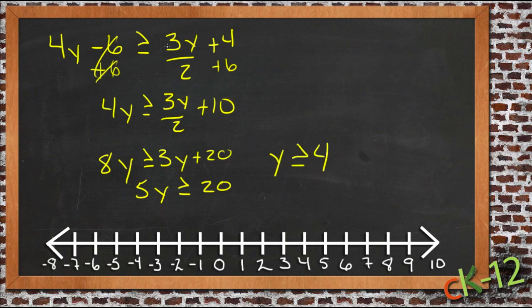So you can see these are exactly the same series of steps I would have gone through if this had been an equation. If this just said equals in here, then this wouldn't have been a new lesson. This would have been a lesson we did quite some time ago. The only difference is that we have greater than or equal to. So instead of having a single answer, instead of it just being y equals 4, we have y is greater than or equal to 4.